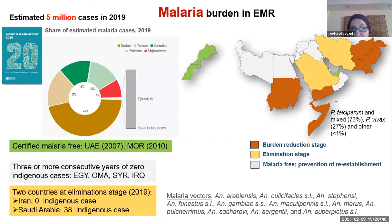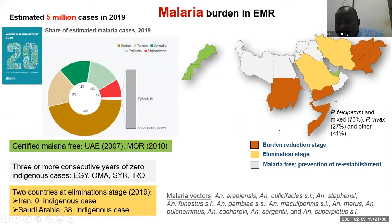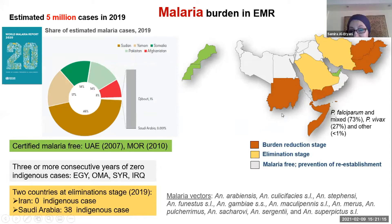This slide presents the malaria burden in our region. Looking at the map on the right, we have eight countries which are malaria endemic — eight of them are at the stage of burden reduction. We also have elimination stage countries, those which are certified, and those which are malaria-free or in prevention of re-establishment. The burden reduction stage comprises six countries.